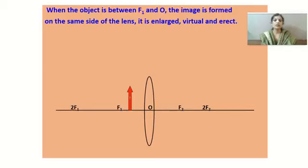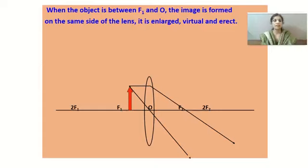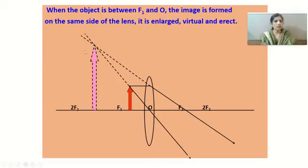When the object is placed between F₁ and the optical center: the first ray parallel to principal axis after refraction passes through F₂; the second ray through the optical center goes undeviated. Both refracted rays do not meet at any point, but if we extend them backward they appear to meet at one place — that is where the image is formed. The image is enlarged, virtual, and erect. This is the only position where we get a virtual and erect image from a convex lens.